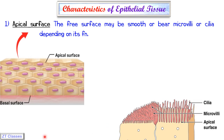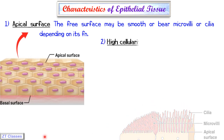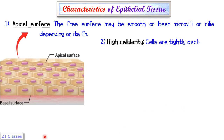The second characteristic is high cellularity — the cells are very compact and tightly packed together.